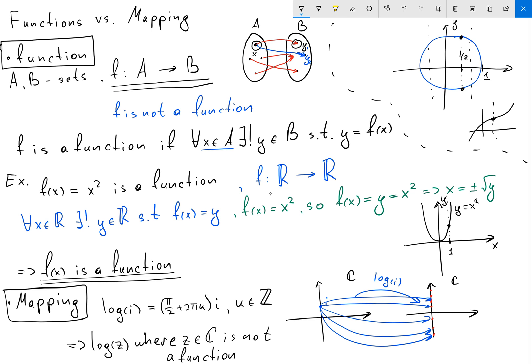So if for every vertical line we're going to intersect our function only in one point, this means that f is a function.